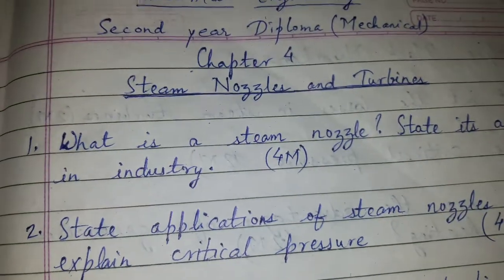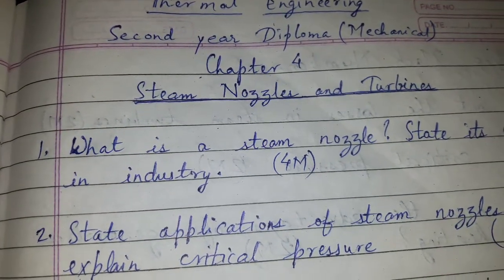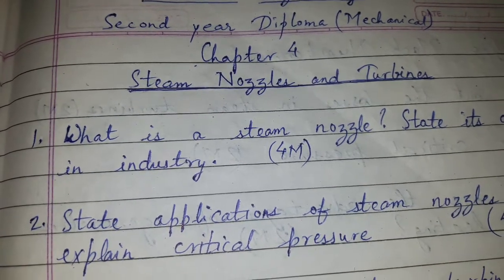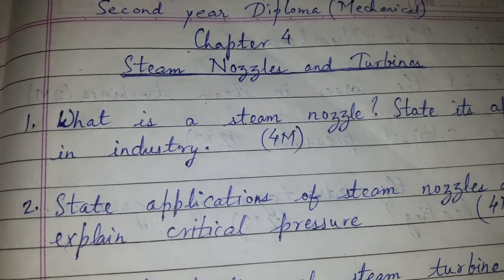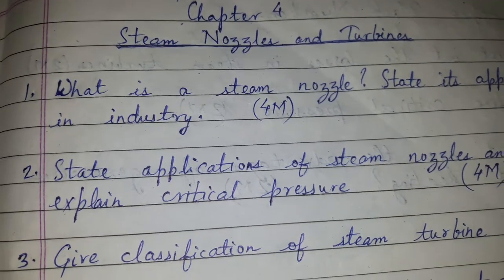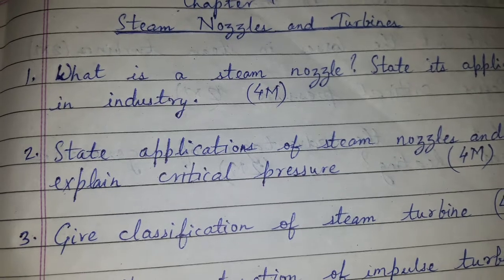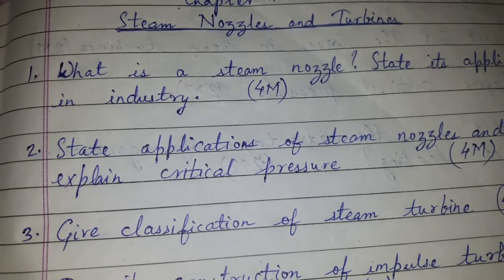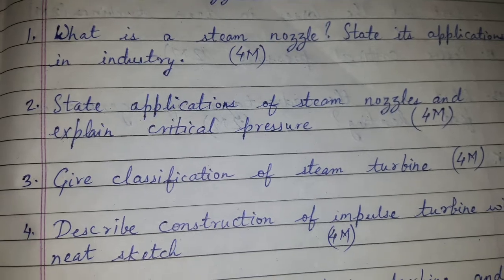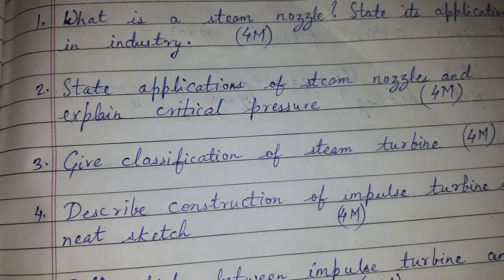Today's topic of discussion is Thermal Engineering, second year diploma mechanical, chapter number four: Steam Nozzle and Turbines question bank — the most likely questions and the corresponding marks. Question one: What is a steam nozzle? State its application in industry, for four marks. Question two: State applications of steam nozzle and explain critical pressure, for four marks.